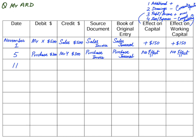On 11th November: Mr. X returns faulty goods worth 50. Whenever a customer returns goods to us it is called return inward (formerly sales return). Return inward is debited because goods are coming into the business, and Mr. X's account is credited by 50 because he will no longer owe us that amount. The source document is a credit note issued by us to Mr. X.